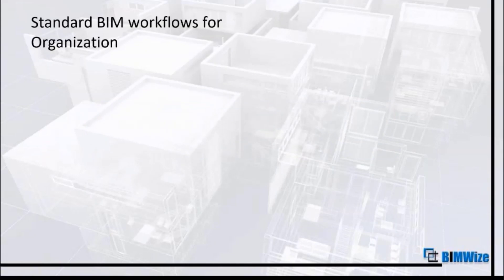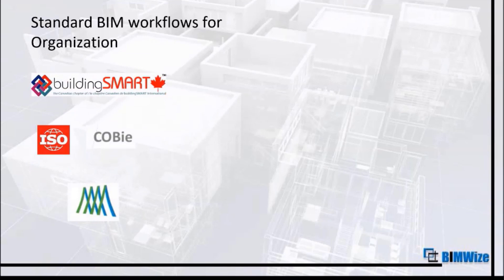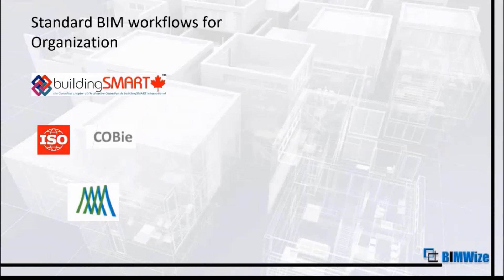We do standardization in BIM on two levels: one at an organization level, and the other at an individual project level. Different companies and organizations set up standards. For Canada, we have the BuildingSmart Canadian chapter. There are ISO standards, the UK follows SCOBE standards, and the US has the National CAD standards, which now also includes National CAD and BIM standards. We can refer to and study these standards.